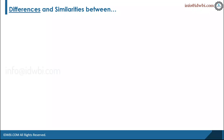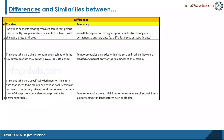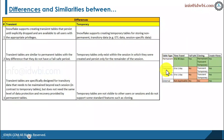Another common interview question is: explain the differences and similarities between transient and temporary tables. You can extend this question to other types of tables or views, but for now let's see the differences and similarities between transient and temporary tables. There are four different types of tables: permanent, transient, temporary, and external.